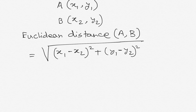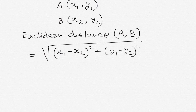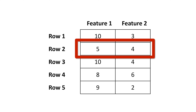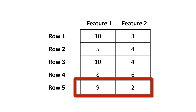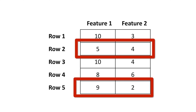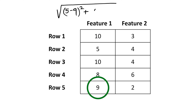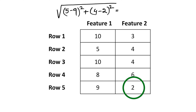is equal to the square root of (x1 minus x2) squared plus (y1 minus y2) squared. The distance between two rows of a data table can be computed using the same Euclidean distance formula because tabular data forms a Euclidean space. For example, consider row 2 and row 5 of this table. Row 2 has 5 and 4 as its two features and row 5 has 9 and 2. Therefore, the distance between row 2 and row 5 is equal to the square root of (5 minus 9) squared plus (4 minus 2) squared. The result becomes 4.4721.